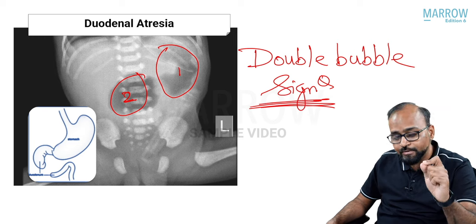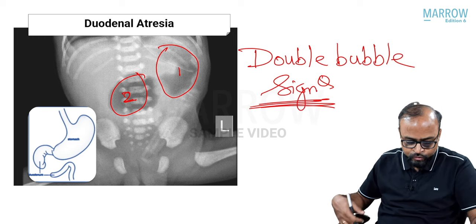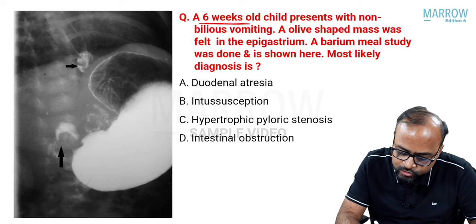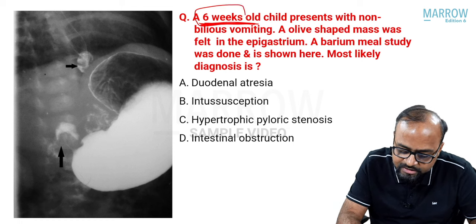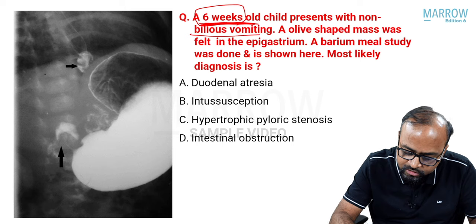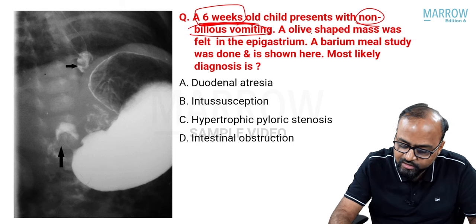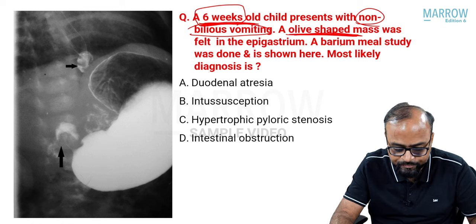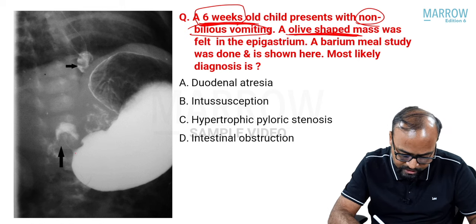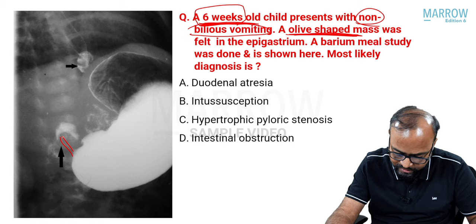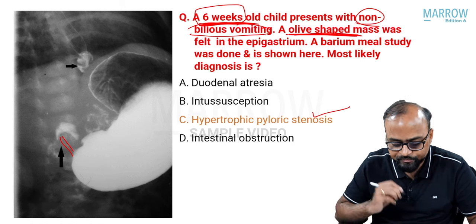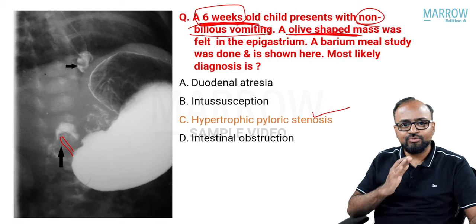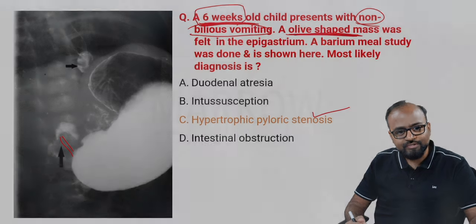Single bubble sign is traditionally described in pyloric stenosis; double bubble in duodenal atresia; triple bubble in jejunal atresia; multiple bubble sign in ileal atresia. Coming back to our question: the child presents at six weeks with non-bilious vomiting, olive-shaped epigastric mass, and barium meal showing a narrow pyloric canal — this is hypertrophic pyloric stenosis.